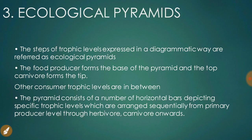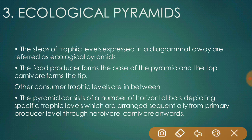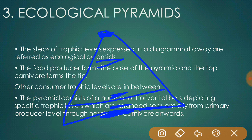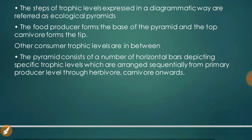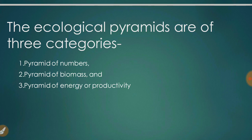The third concept is ecological pyramids. The steps of trophic levels expressed in a diagrammatic way are referred to as ecological pyramids. The producer forms the base of the pyramid and the top carnivore forms the tip. The pyramid consists of a number of horizontal bars arranged sequentially from the primary producer level through herbivore and carnivore levels, where the length of each bar represents the total number of individuals at each trophic level.